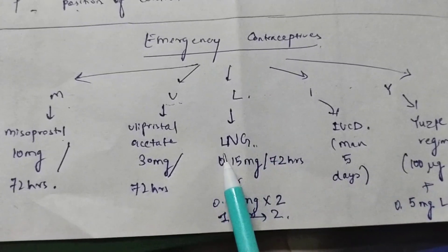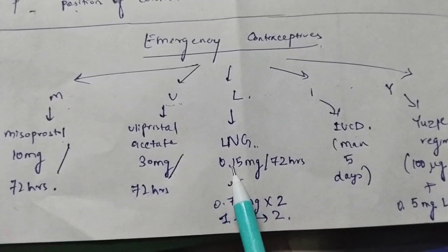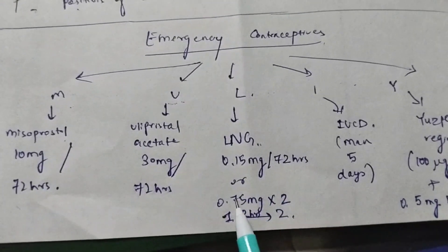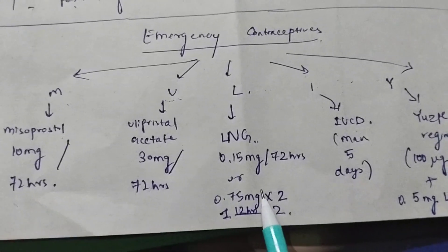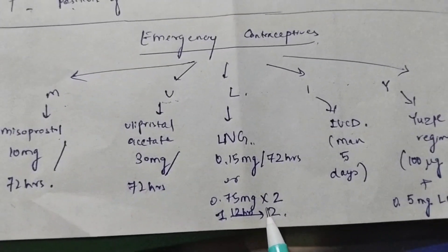L is levonorgestrel. There are 2 regimens for this. One is 1.5 mg within 72 hours, or you can take 0.75 mg as the first dose and after 12 hours take the second dose of 0.75 mg.